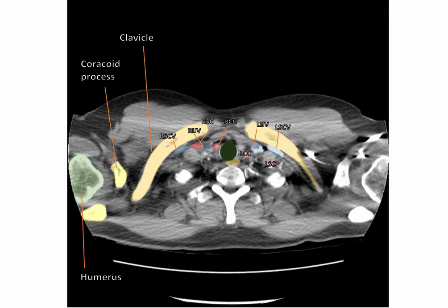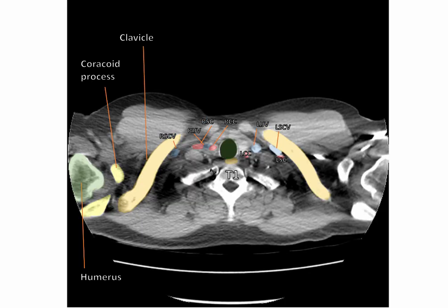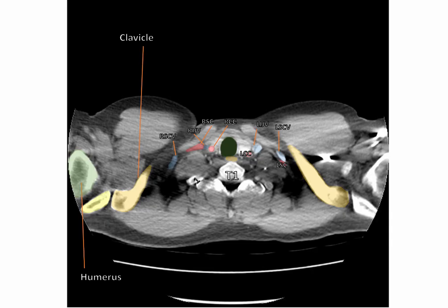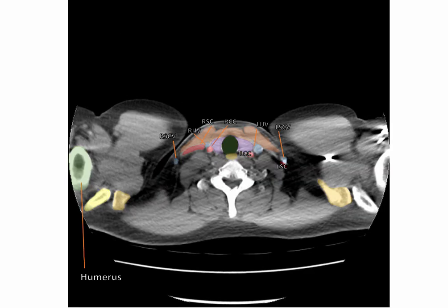We can also see the associated pectoralis minor muscle, and external to that, the pectoralis major muscle. As we proceed upwards, we can see the acromial end of the clavicle articulating with the acromion of the scapula here at the acromioclavicular joint. Also at this level, we can see the sternocleidomastoid muscles and the deeper strap muscles of the neck. We can also see the thyroid gland, which is anterior to the trachea, in purple. We have now reached just above the level of the superior thoracic aperture, also known as the thoracic inlet, sometimes known clinically as the thoracic outlet.